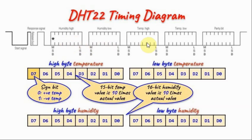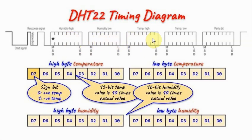To summarize using the timing diagram: the microcontroller sends a start signal, the sensor acknowledges with a response signal, and then the sensor sends the 40-bit data. The first byte is the humidity high byte, the second is the humidity low byte, the third is the temperature high byte, the fourth is the temperature low byte, and the last byte is the checksum byte.